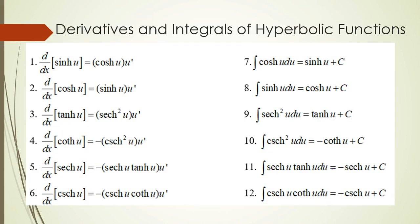Now, the derivatives and integrals. The hyperbolic functions behave similar to the trig functions — not exactly the same, but pretty similar. The derivative of hyperbolic sine is hyperbolic cosine. The derivative of hyperbolic cosine is hyperbolic sine. The u-prime factor is from the chain rule — take the derivative of the inside of the function. The antiderivative of hyperbolic cosine of u is hyperbolic sine of u plus C. The antiderivative of hyperbolic sine of u is hyperbolic cosine of u plus C — you don't have the negative sign like you would for a regular trig function. I do not require that you memorize these, but you should know how to use them.